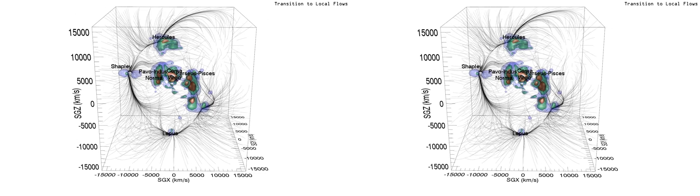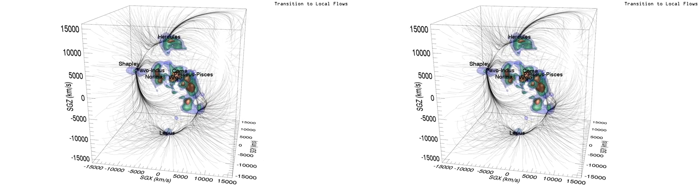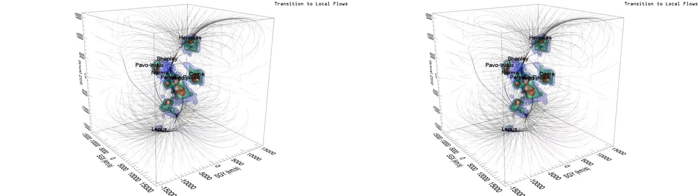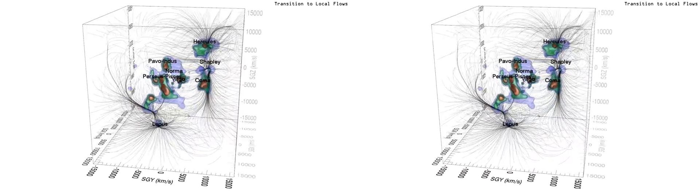Contours begin to be distinguished. Hercules separates from Shapley, and Perseus Pisces separates from Lepus.